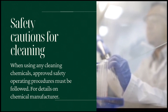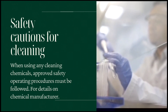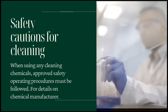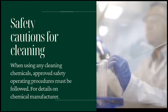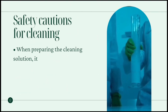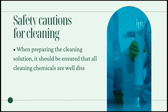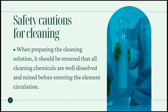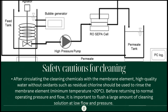Safety cautions for cleaning: when using any cleaning chemicals, approved safety operating procedures must be followed. For details on chemical safety, use, and disposal, please consult the chemical manufacturer. When preparing the cleaning solution, ensure that all cleaning chemicals are well dissolved and mixed before entering the element circulation. After circulating the cleaning chemicals with the membrane element, high-quality water without oxidants such as residual chlorine should be used to rinse the membrane element, with a minimum temperature of 20°C. Before returning to normal operating pressure and flow, it is important to flush a large amount of cleaning solution at low flow and pressure.